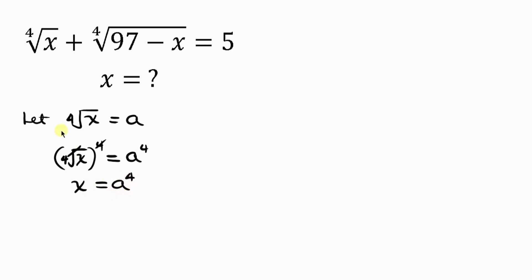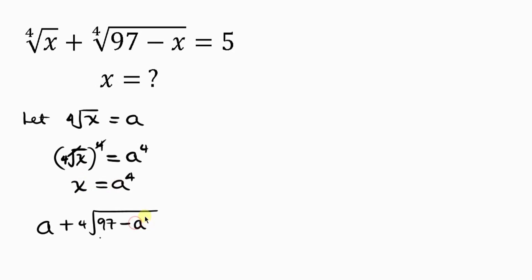Our next step is to rewrite the given expression. Since the fourth root of x equals a, we have a plus the fourth root of 97 minus x. And since x equals a to the power of 4, we substitute to get a plus the fourth root of 97 minus a⁴, equal to 5.